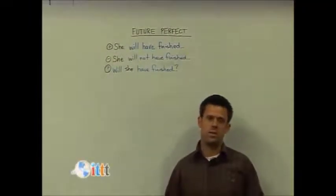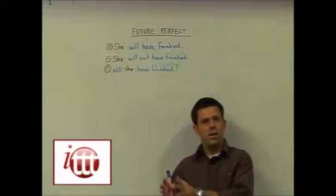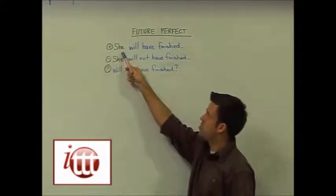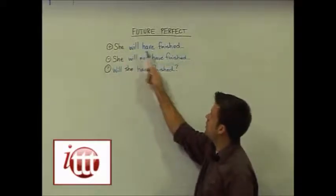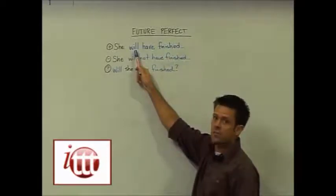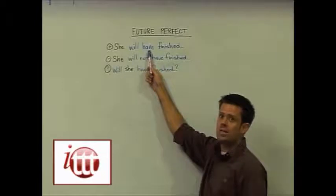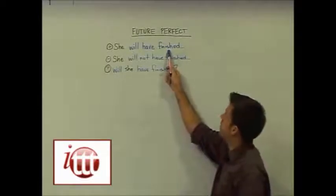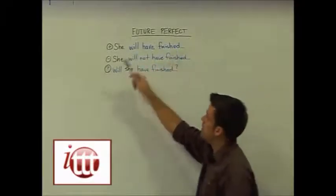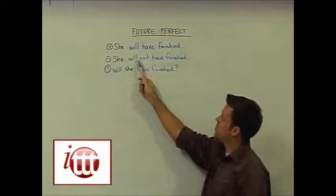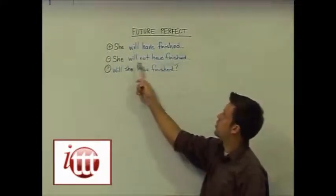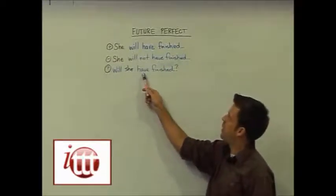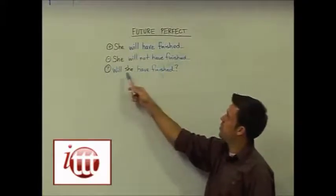Now let's have a look at the future perfect tense. The future perfect tense is used to talk about an action in the future that will be completed by a point in the future. For the positive form, we have our subject — using 'she' — the word 'will,' our auxiliary verb 'have,' and the past participle of the main verb: 'she will have finished.' For the negative, we add 'not' between 'will' and 'have': she will not have finished. For the question, we start with 'will,' then subject, auxiliary verb 'have,' and main verb 'finished': will she have finished?